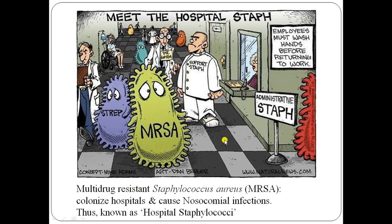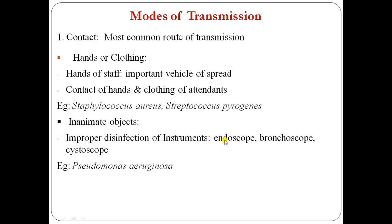Modes of transmission in nosocomial infection: the first is contact mode, which is the most common route of transmission — through hands or clothing. The hands of staff are an important vehicle of spread because staff are always around patients. Contact of hands and clothing of attendants can spread organisms such as Staphylococcus aureus and Streptococcus pyogenes.